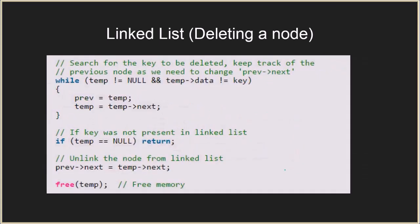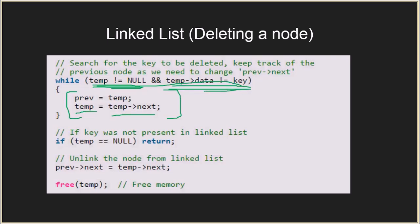If the key is not in the first node, we need to find it by traversing the linked list. We check that temp is not null and that the data part of temp is not equal to the key, and keep traversing. We update previous to temp and move temp to the next node, continuing until we either reach the end of the list or find a match for the key.